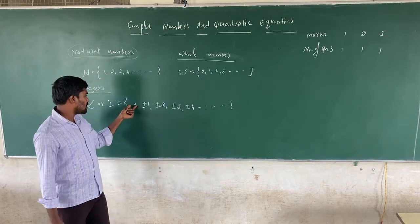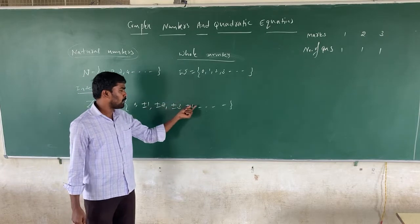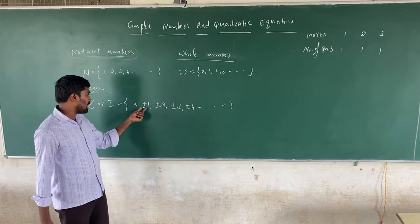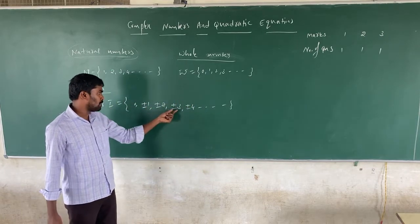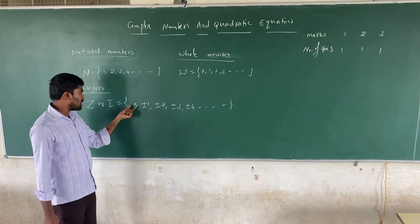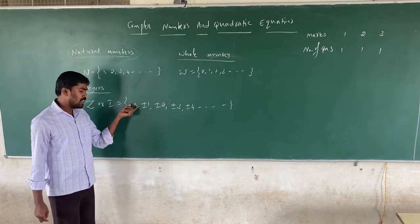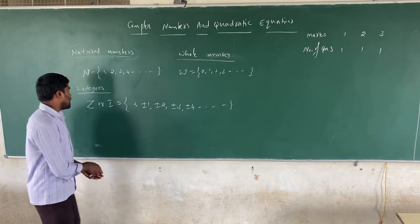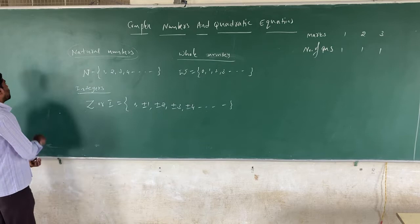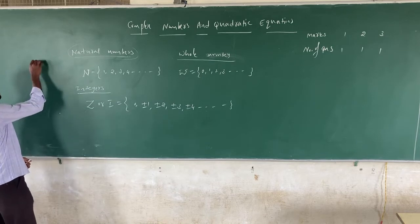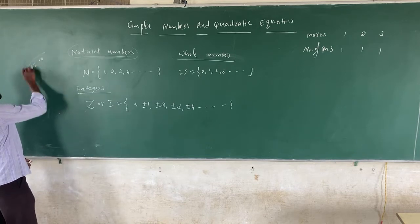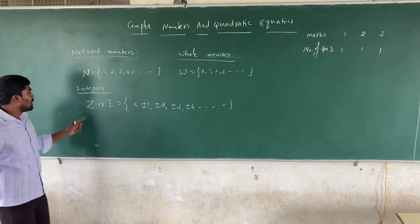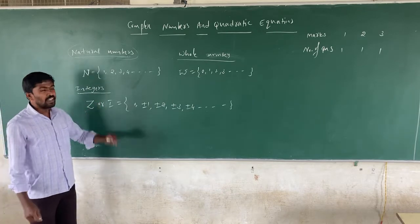Whole numbers are 0, 1, 2, 3, 4, 5, and so on. Their negatives are minus 1, minus 2, minus 3, minus 4. Note that 0 is the negative of 0.